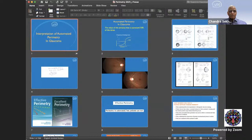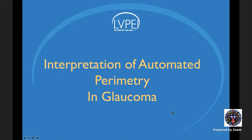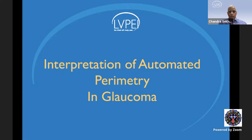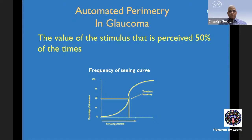I'll start sharing my screen. I hope I'm audible and my screen is visible. The topic is interpretation of automated perimetry in glaucoma. To start with, I will probably step back. What we are trying to do in automated perimetry is actually look at retinal sensitivity, which we define as the stimulus intensity that is perceived 50% of the times. With innovations condensing the time frame from full threshold to SITA standard to SITA fast and now SITA faster, we are putting the patient in a lot of stress.